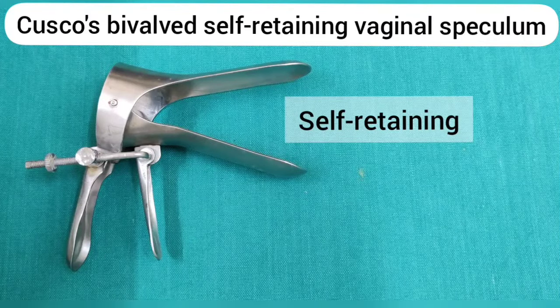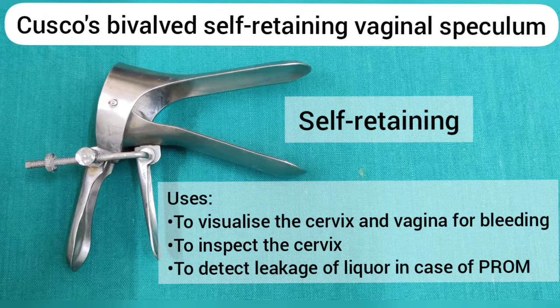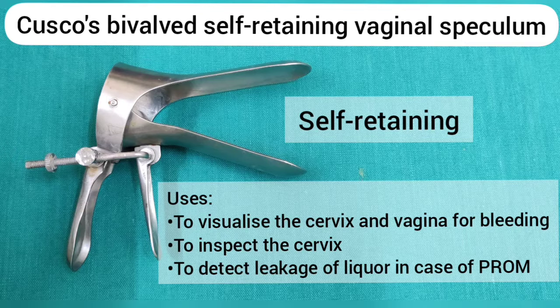Cusco's bivalve self-retaining vaginal speculum. It is used to visualize the cervix and vagina, for bleeding, to inspect the cervix, and to detect leakage of liquor in case of premature rupture of membranes.